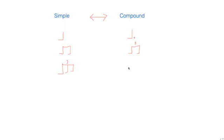But if I divide a dotted crotchet into three, I just get regular quavers. You see where I'm going with this?